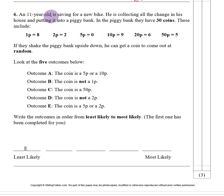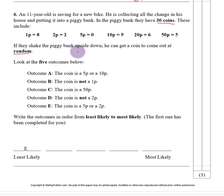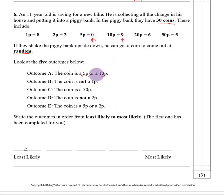Number six. An 11-year-old is saving for a new bike and has 30 coins in a piggy bank: 8 one-pence, 2 two-pence, 0 five-pence, 9 ten-pence, 6 twenty-pence, and 5 fifty-pence. If he shakes the piggy bank a coin comes out at random. We need to write each of five outcomes as a probability fraction and order them from least likely to most likely. The first outcome is a 5p or 10p: 5p we have none, 10p we have 9, so that is 9 out of 30.